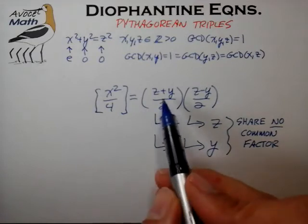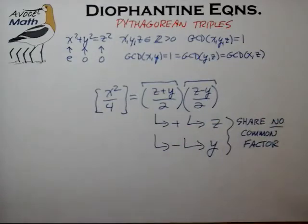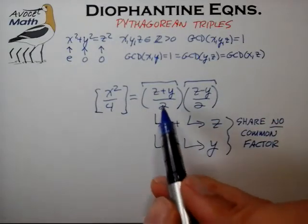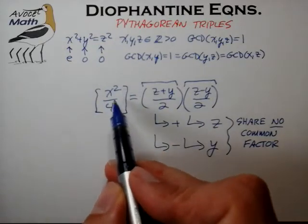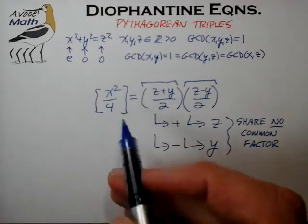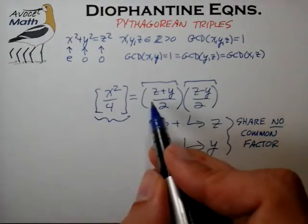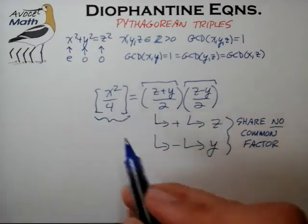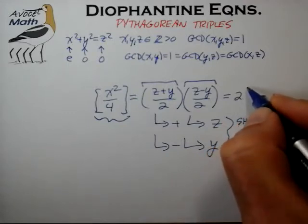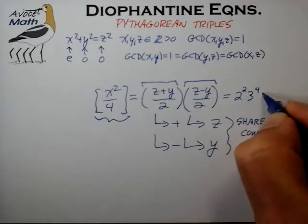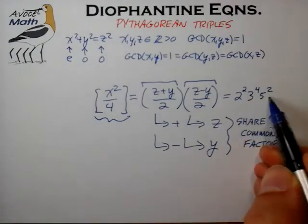So we now know the two groupings share no common factor. The next question is the nature of these two factors. On the left-hand side we have an even-numbered square divided by 4, which is itself a perfect square. So the right side also has to be a square number. A square number has prime factorizations with even exponents — for example, 2², 3⁴, 5². That's the key: each prime factor must have an even exponent to satisfy the condition of being a square number.